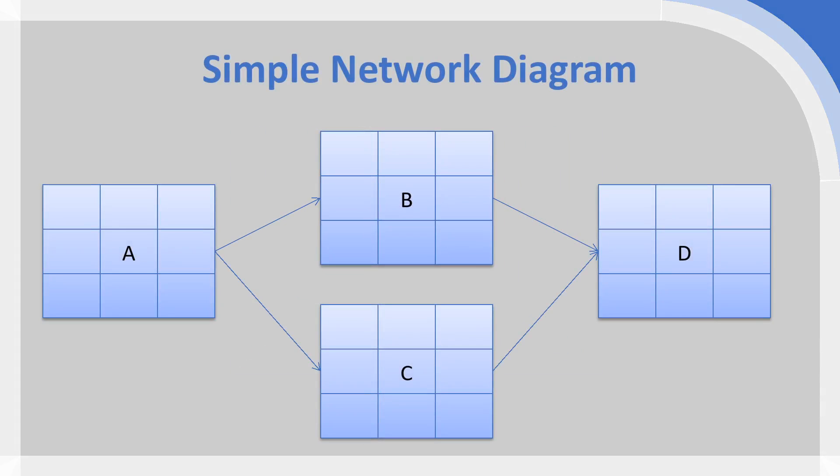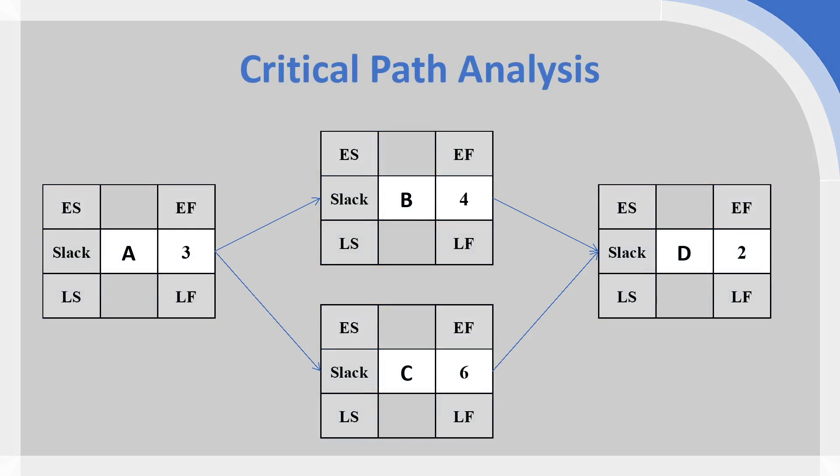Looking at our simple example, we have four activities laid out in sequence, with activities B and C able to run in parallel. From our activity list we can put the estimated duration in the middle-right square of each node: activity A is three days, activity B is four days, activity C is six days, and activity D is two days. Those are the two things we can fill in at the start of critical path analysis: the activity code and the estimated duration.